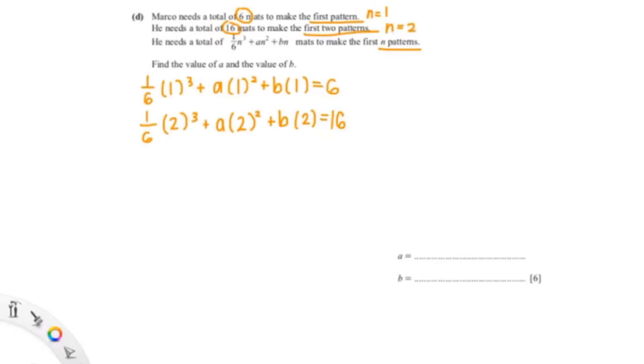So we'll just simplify that. So 1/6 plus a plus b equals 6. For this would be 8/6 which you could simplify, so that would be 4/3 plus 4a plus 2b equals 16.